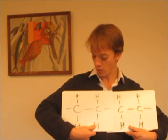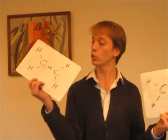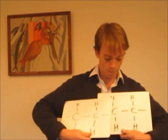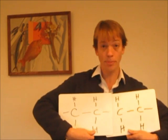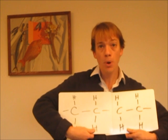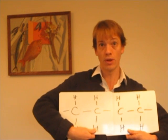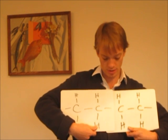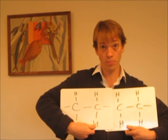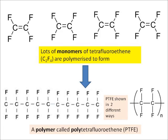So our monomer was called ethene, so our polymer is going to be called polythene. There we go — that's polythene.